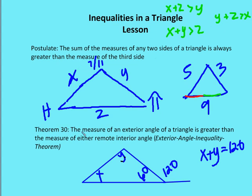Theorem 30: the measure of an exterior angle of a triangle is greater than the measure of either remote interior angle. This is the exterior angle inequality theorem. We recall from a prior lesson that the exterior angle of a triangle is equal to the sum of the remote interior angles. So if x plus y equals 120 degrees, and assuming x and y cannot be zero, then this exterior angle must be greater than either x or y.